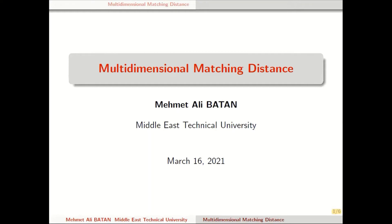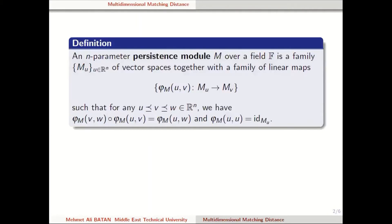Let me start with the definition of a persistence module in the higher parameter case. An n-parameter persistence module M over a field F is a family of vector spaces with a family of linear maps between vector spaces such that for every partial order we have the following equalities: from M_u to M_v and then M_v to M_w is the same linear map as M_u to M_w. Similarly, the linear map from the vector space to itself is nothing but the identity linear map.